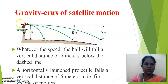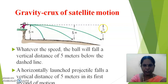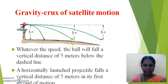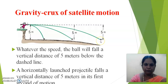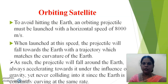The second fact is gravity. Consider a baseball pitcher standing atop a building and throwing a ball. If there is no gravity, the ball would move in a straight-line path. But since there is gravity, the ball will follow a curved path and reach 5 meters below the dashed line within its first second of motion. Whatever the speed, the ball will fall a vertical distance of 5 meters, calculated by Galileo as d = ½gt². Since g ≈ 10 m/s² and t = 1 second, the distance is 5 meters. A horizontally launched projectile falls 5 meters in its first second of motion.